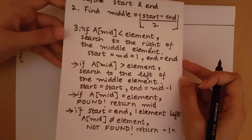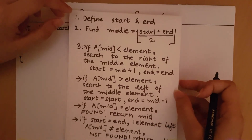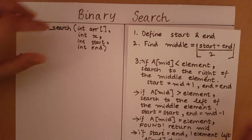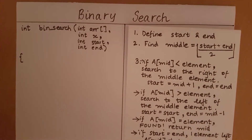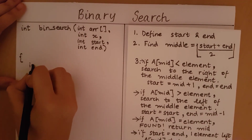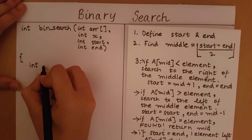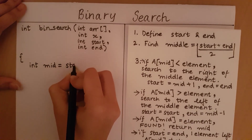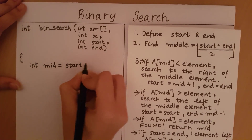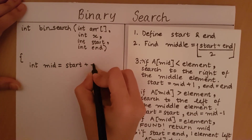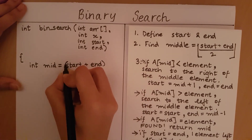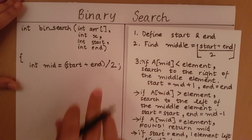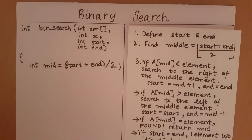Let's look at the parameters to the binary search. We will first have the array — I am taking it as an integer array for an example. Then I need the element which I am searching for; I am going to call that x. Then I will need to define start and end for each call of the binary search, so I will also require start and end as my input parameters. So with this I have finished defining my function. The first step we do is we find the middle, so let me create a variable for the middle and compute it. With this I get the value of the middle.